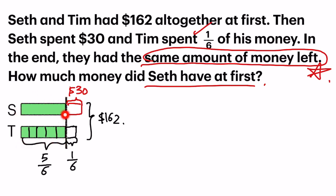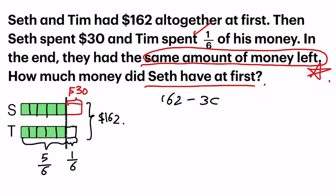Now let's take a look at the model. Do you observe that this part of the model is the same? So at the bottom there are five units, which means at the top I can also cut it into five units. Using the unitary method, to find one unit I have to take away the extra that doesn't belong to this particular size — in this case, the $30. So that's my first step: 162 minus 30 gives me 132.